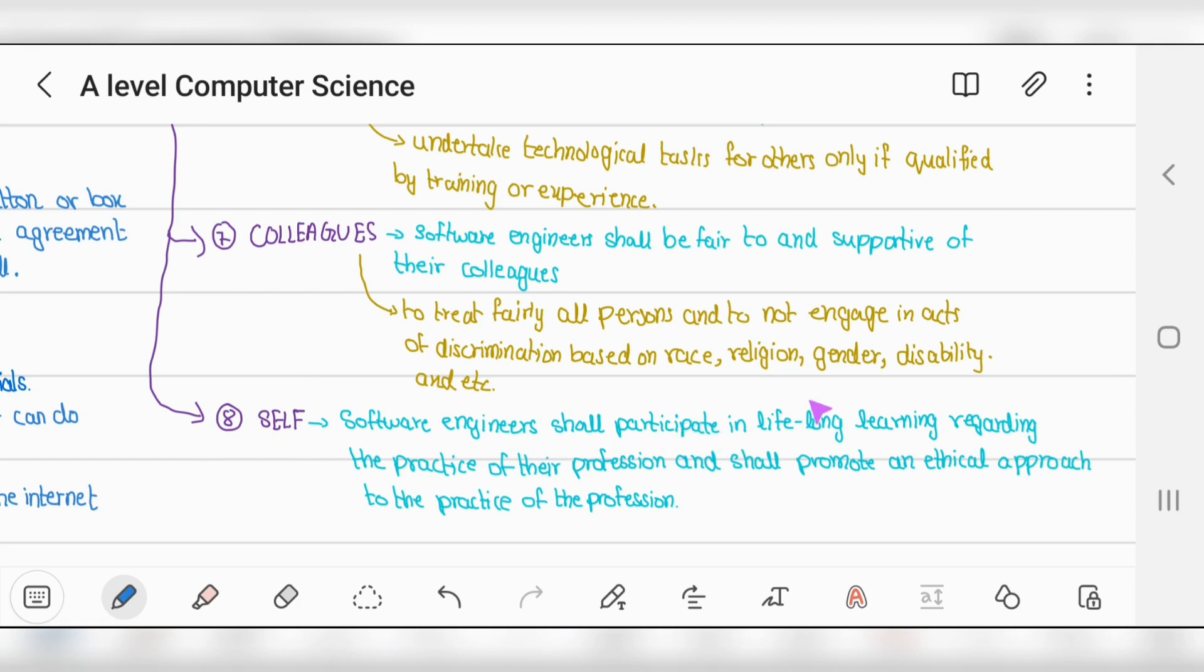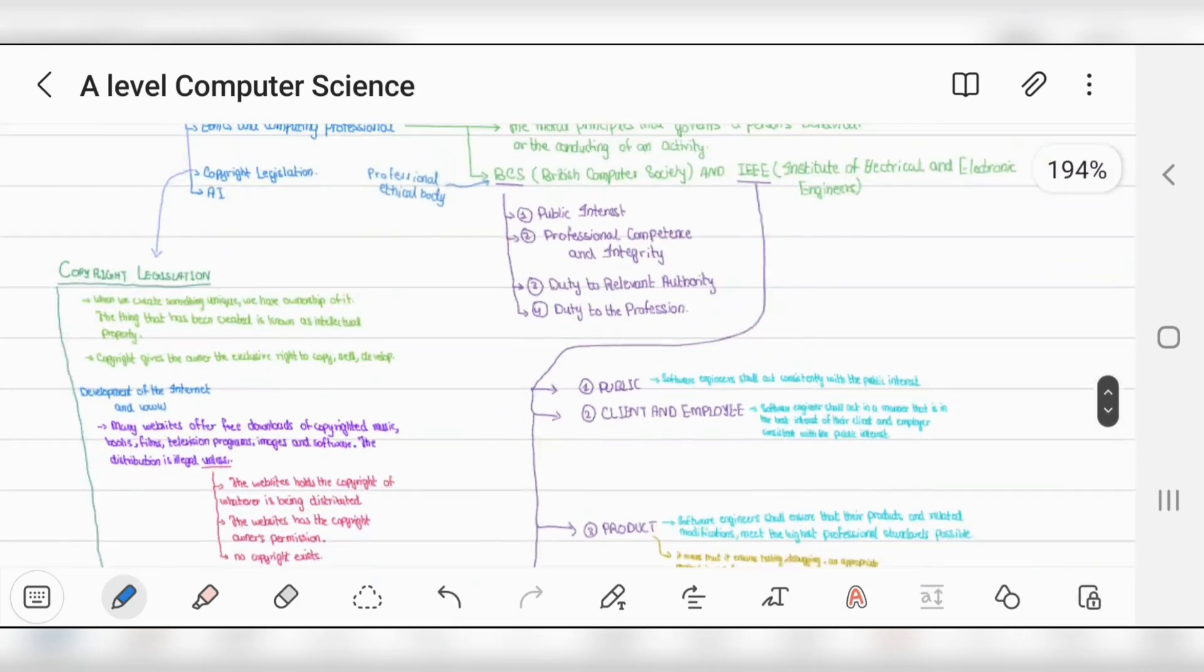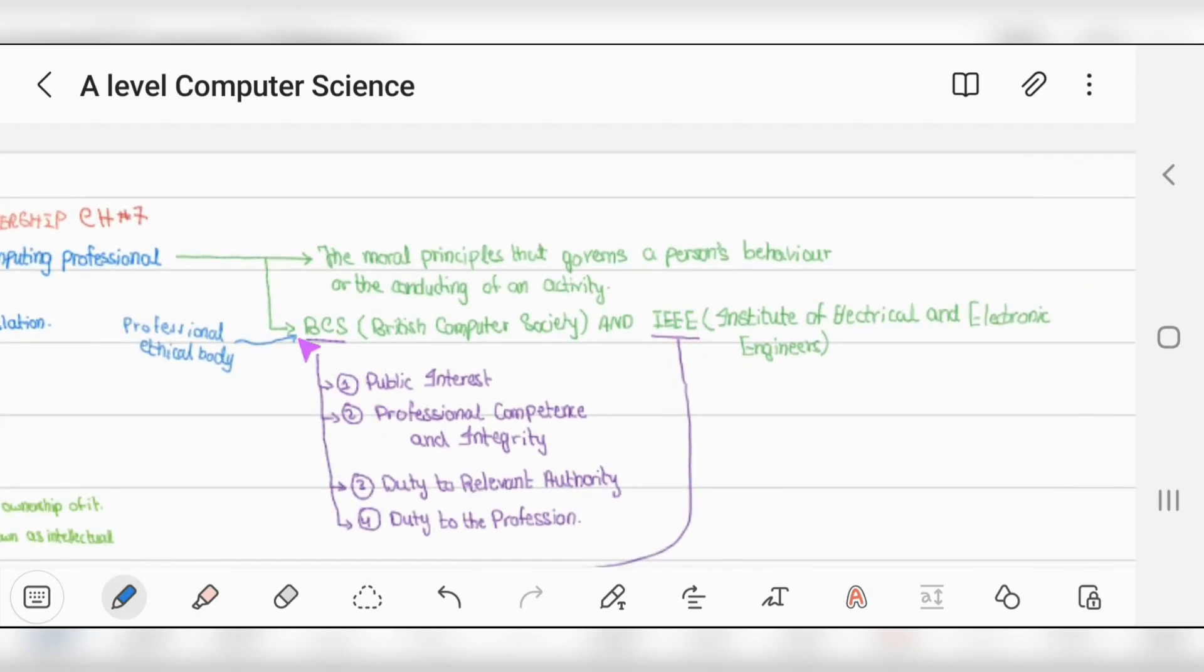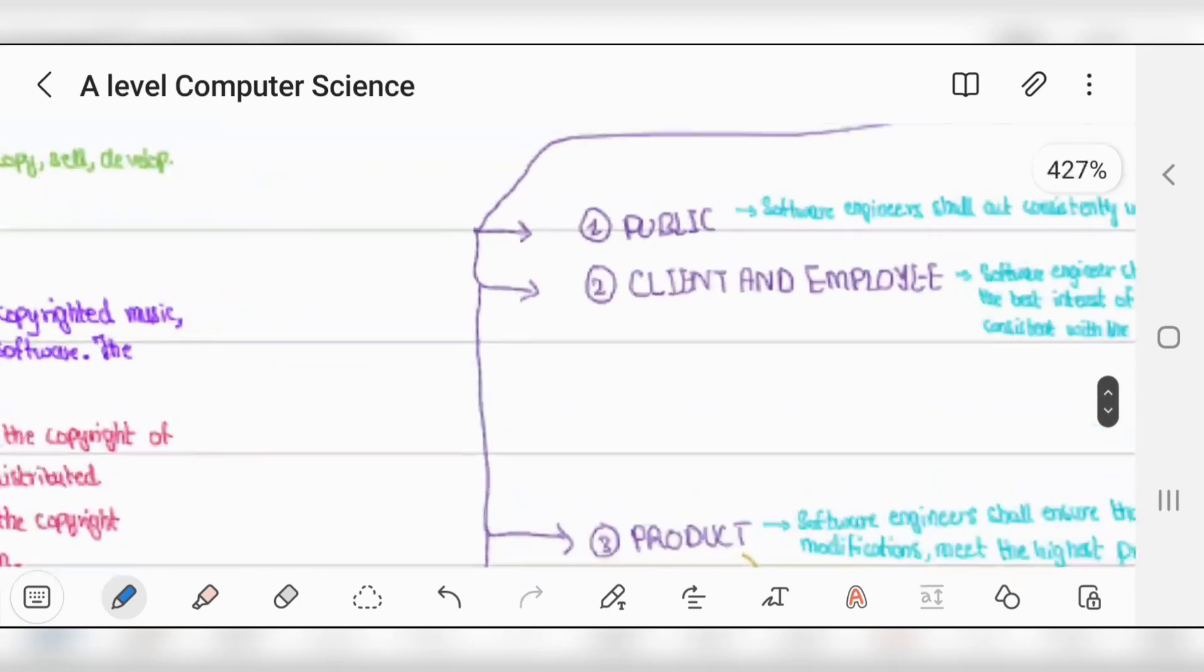Number eight, self: software engineers shall participate in lifelong learning regarding the practice of their profession and promote an ethical approach. Try your best to learn more and become an expert. The more experience you get, the more your value grows and the better payment you'll receive. Do it ethically with no shortcuts. These are the eight laws of IEEE and four laws of BCS.